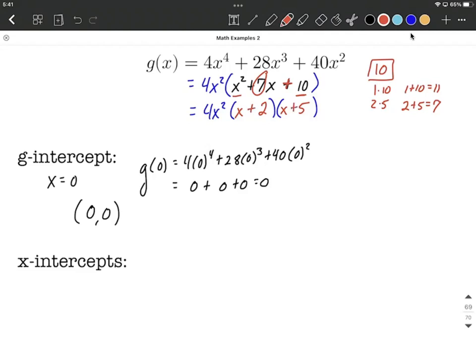Now, we could distribute this back out, FOIL if you will, and double-check our factoring to make sure we got to the same thing as x squared plus 7x plus 10. Now that we've done all of our factoring,